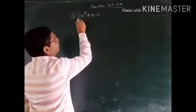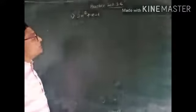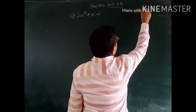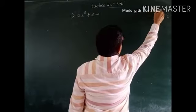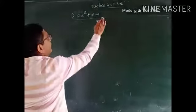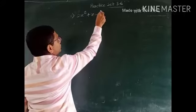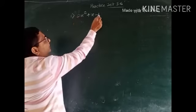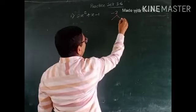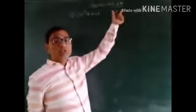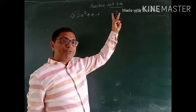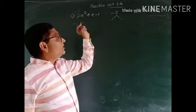See, if this polynomial is in the form of ax² + bx + c — yes, our polynomial is in this form. Now we have to multiply the constant term with the coefficient of the square term, that is -1 into 2, which gives us -2. Now we have to find the factors of -2 such that their multiplication is -2 and their sum is +1.